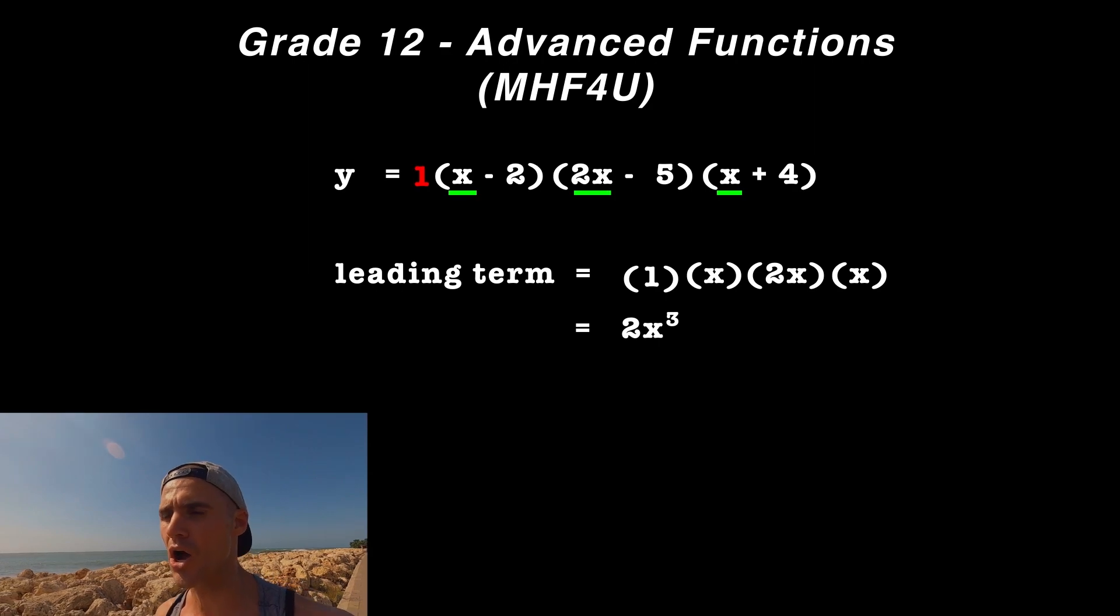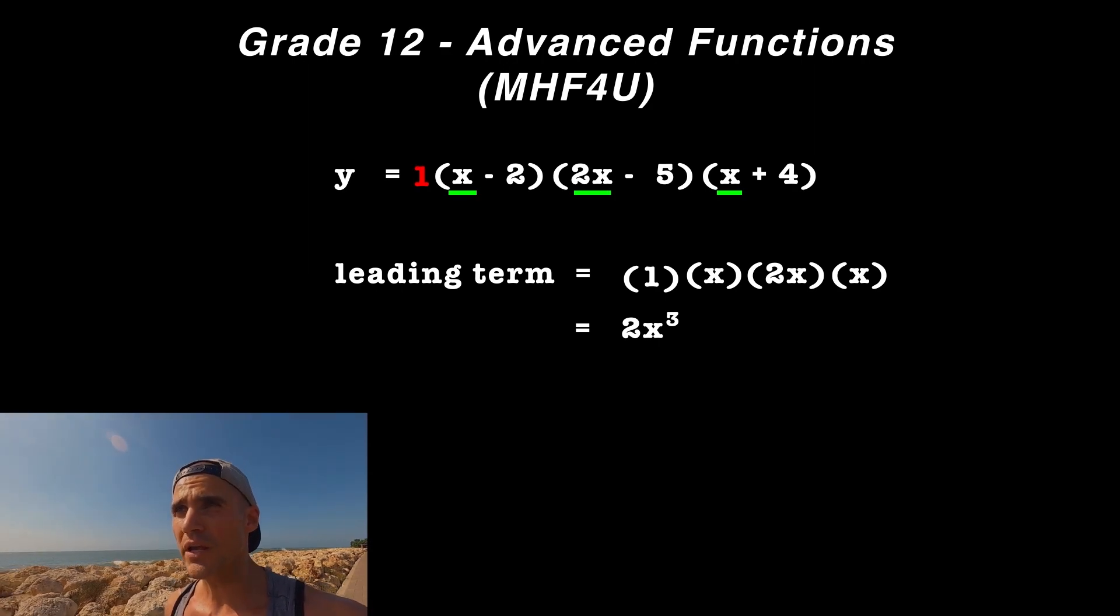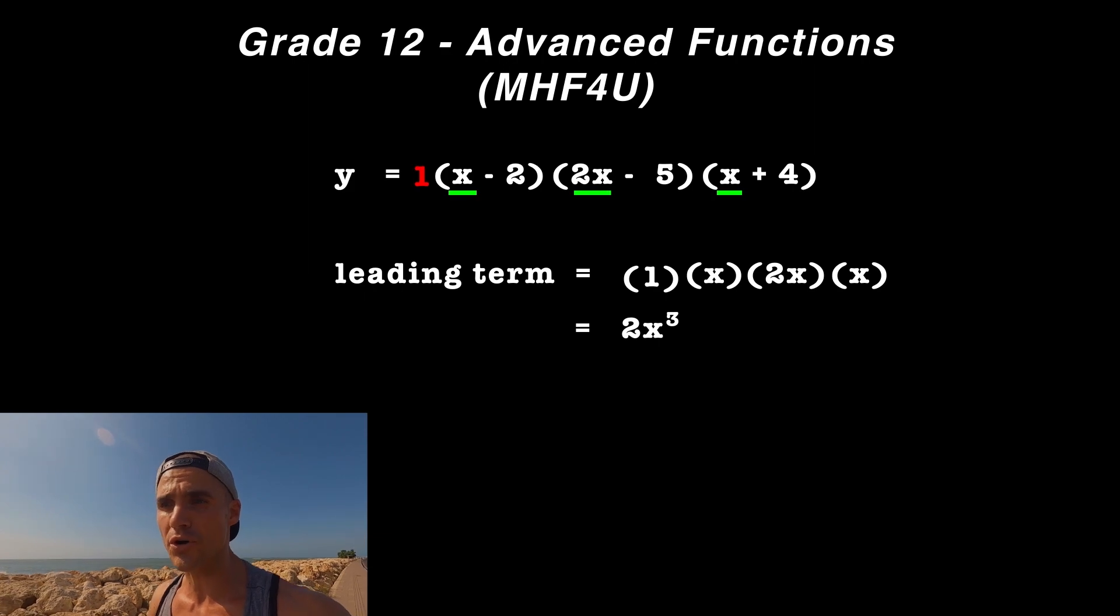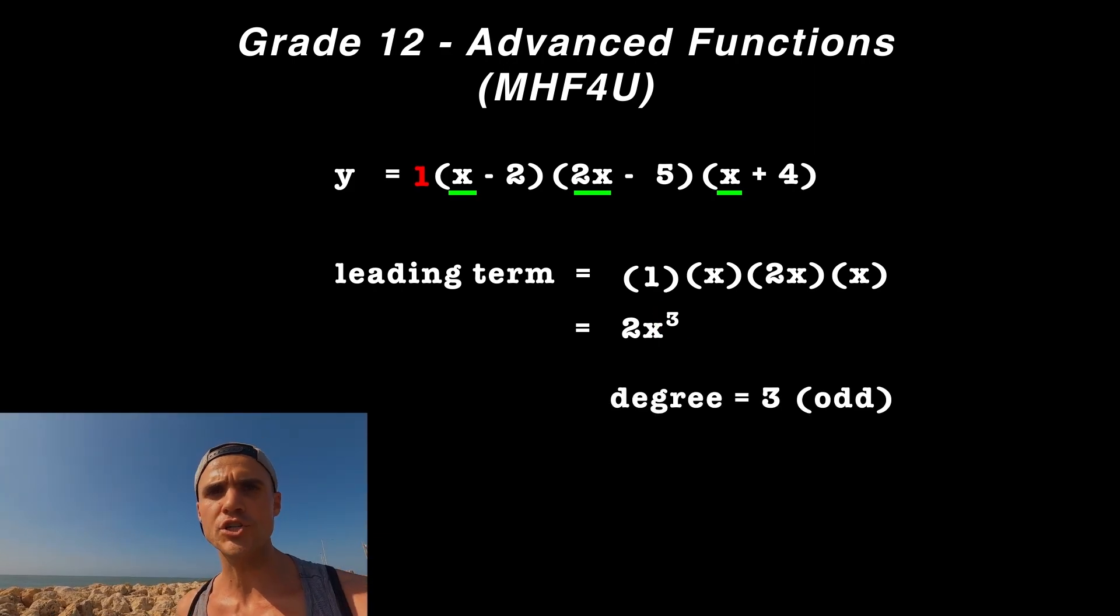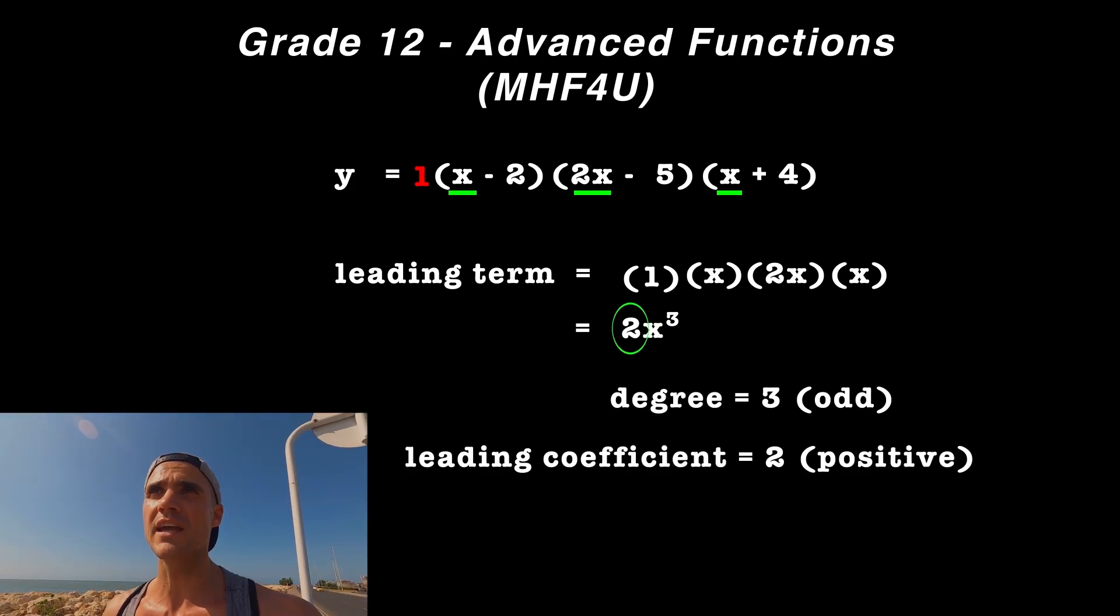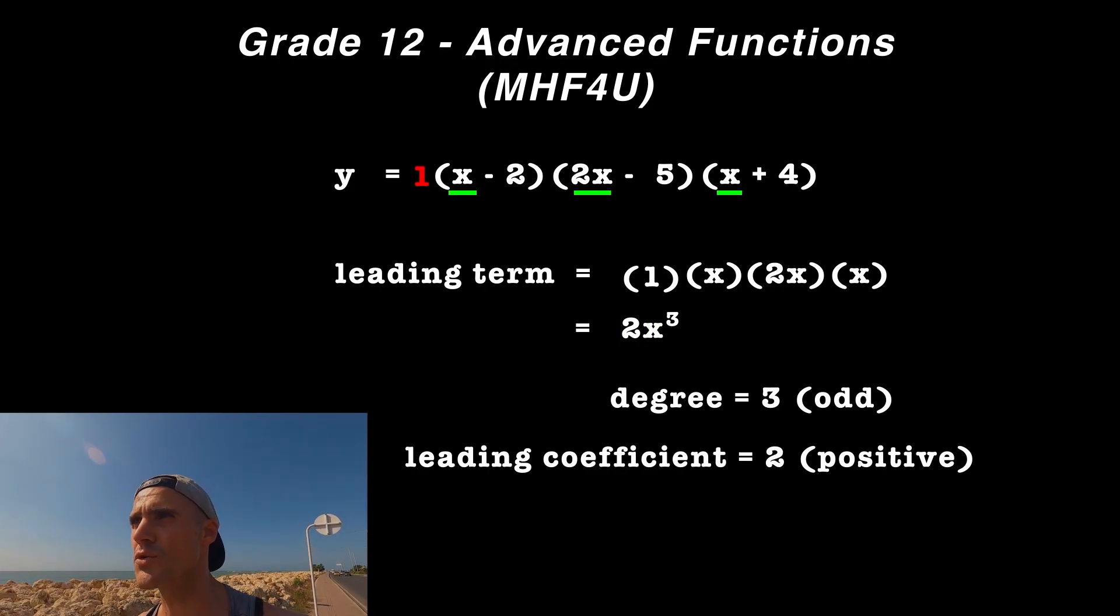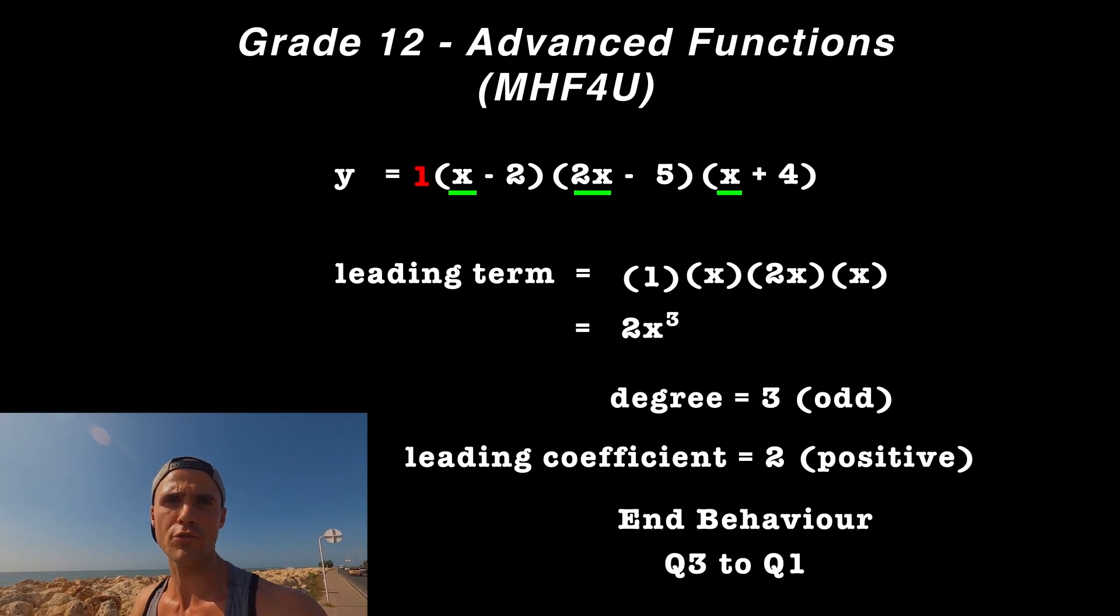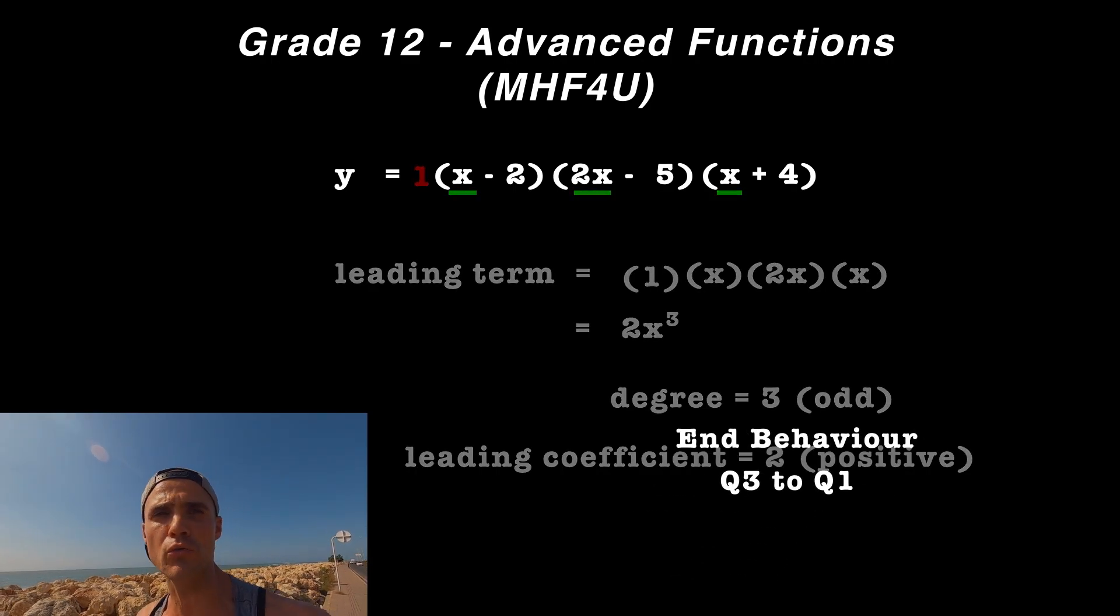From here, we can tell the degree is 3 and the leading coefficient is 2. The degree is odd and the coefficient is positive, so the end behavior goes from quadrant 3 to quadrant 1, reading left to right.